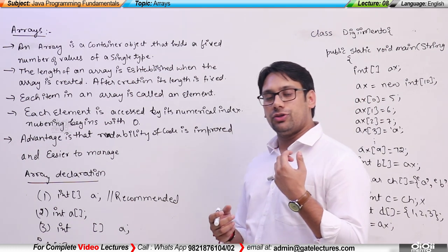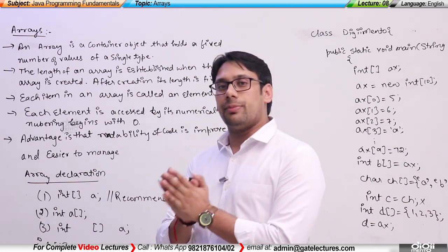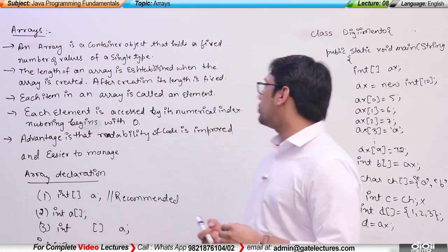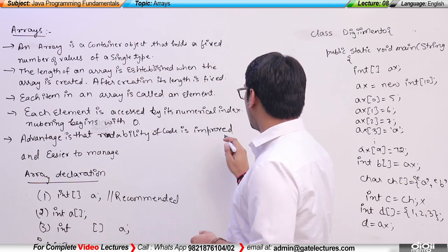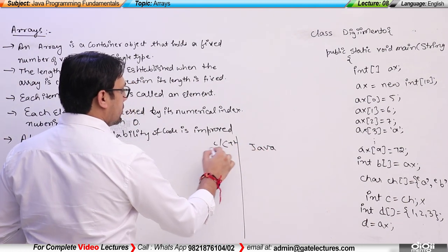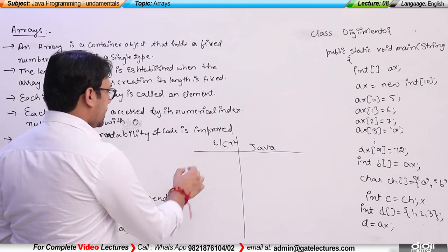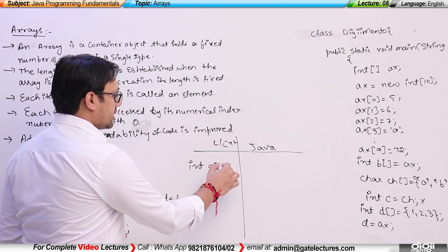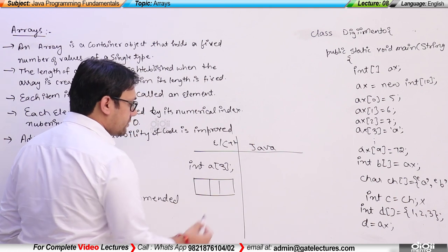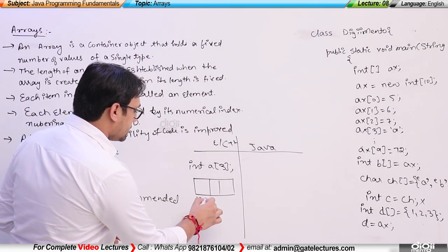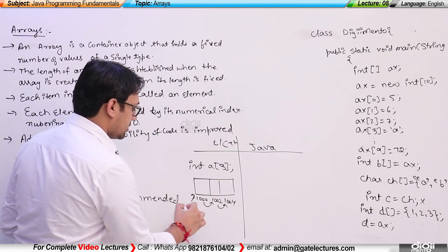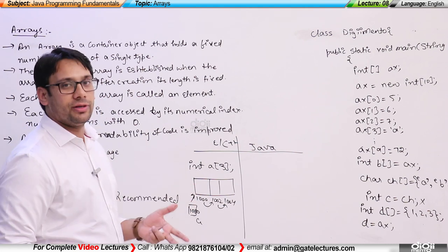In the case of C and C++, whenever you are declaring an array, some kind of memory allocation is done, but there are no inbuilt functions or predefined functions available for that memory location. For example, if I declare an integer array A with 3 index locations in C, contiguous memory locations are allocated. If the address of the first location is 1000, the next will be 1002, then 1004, and so on. A just stores the base address. So no inbuilt functions are available.